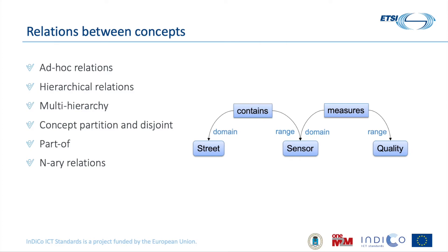We also have relationships between concepts. We can have ad hoc relationships — for example, we can define that a street contains a sensor, or that a sensor measures a quality. And we can have other types of relationships such as hierarchical relationships that can even allow multi-hierarchical relationships, concept partitions, disjoint partitions, mereological relationships such as part-of relationships, or even equivalence relationships.